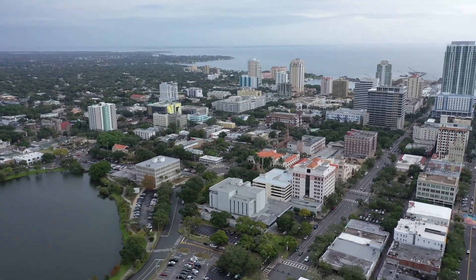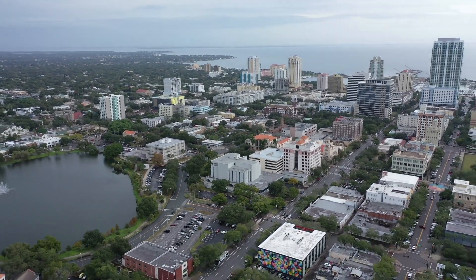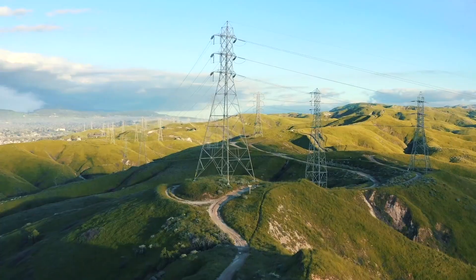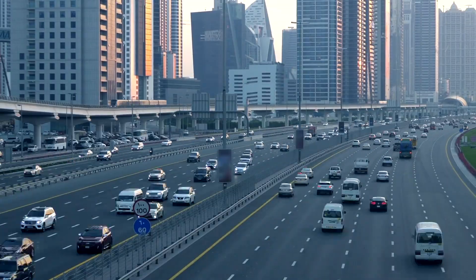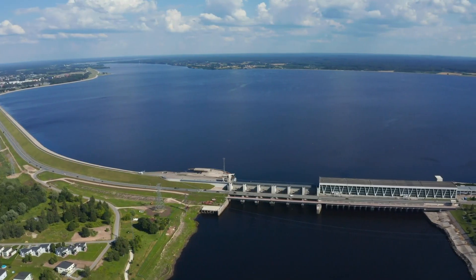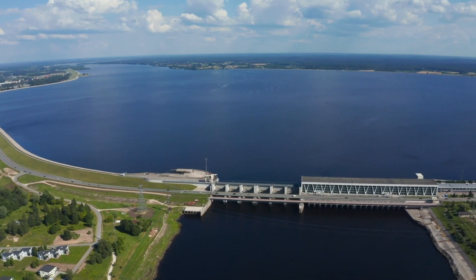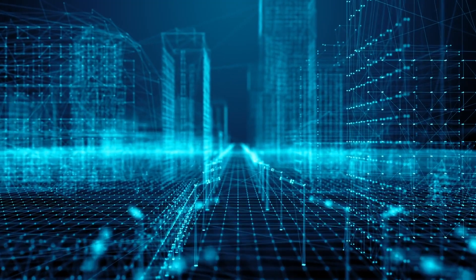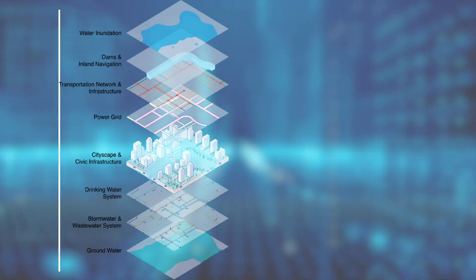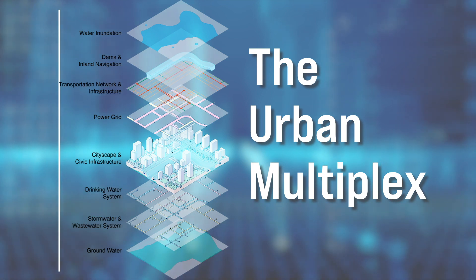Cities are highly complex systems and they include multiple layers of infrastructure — for example the power grid, the transportation network, and the natural systems. All of them are intertwined with the socio-economic sector, and we call this system of systems the urban multiplex.